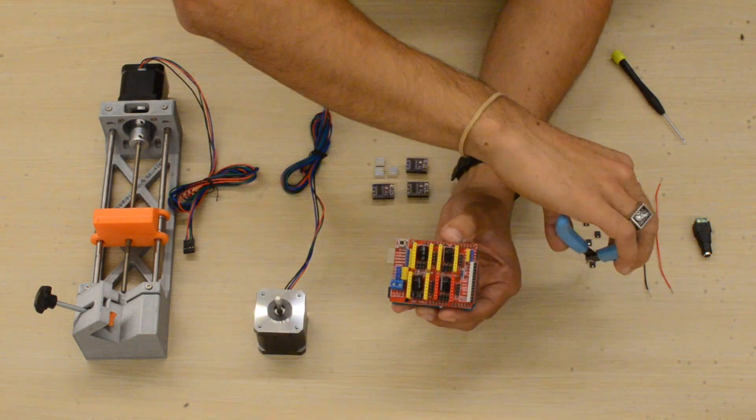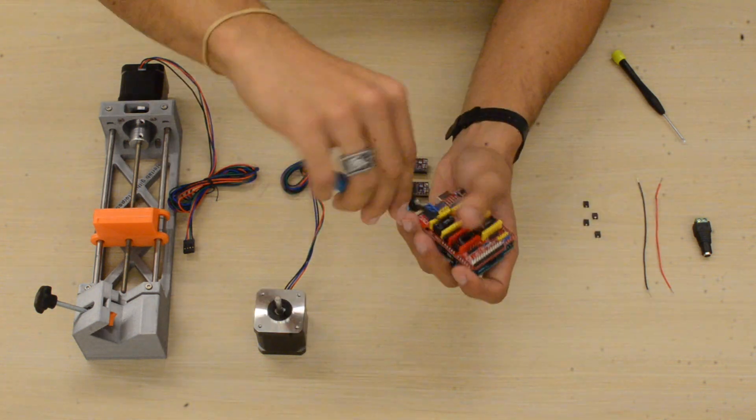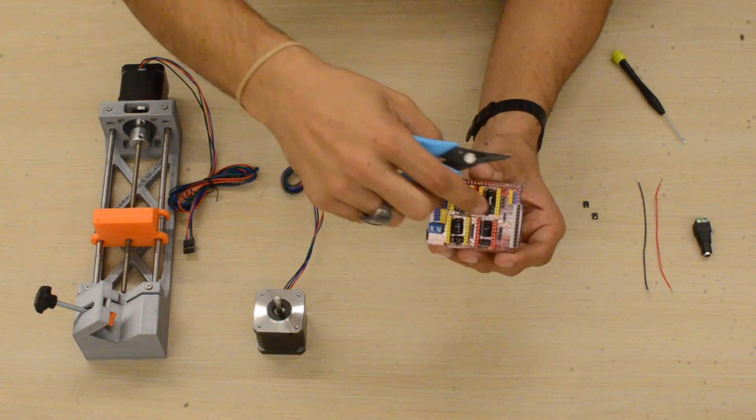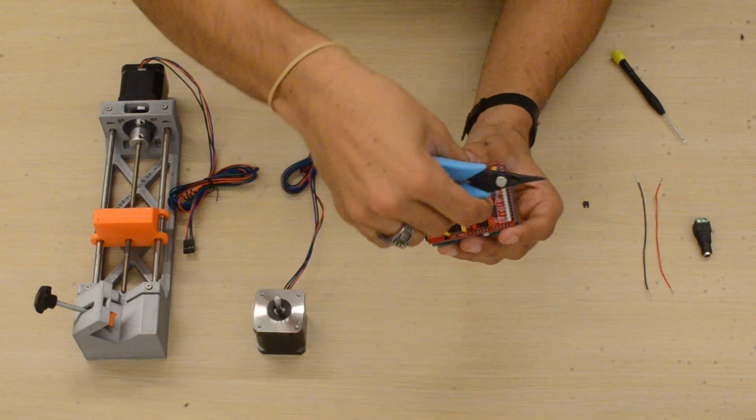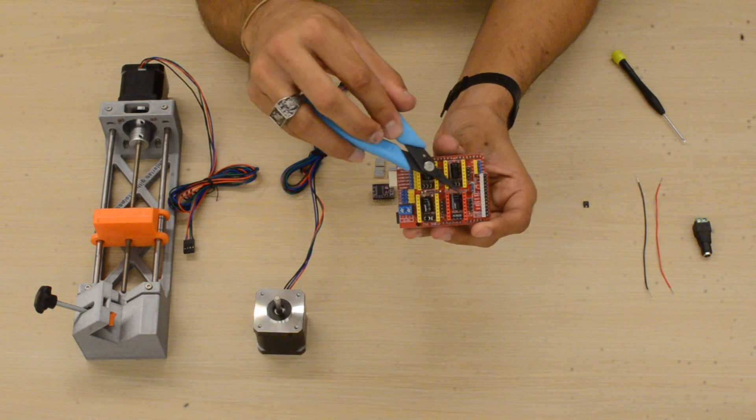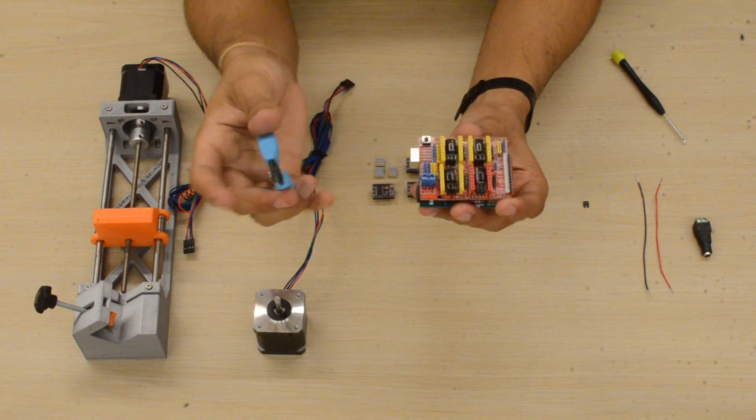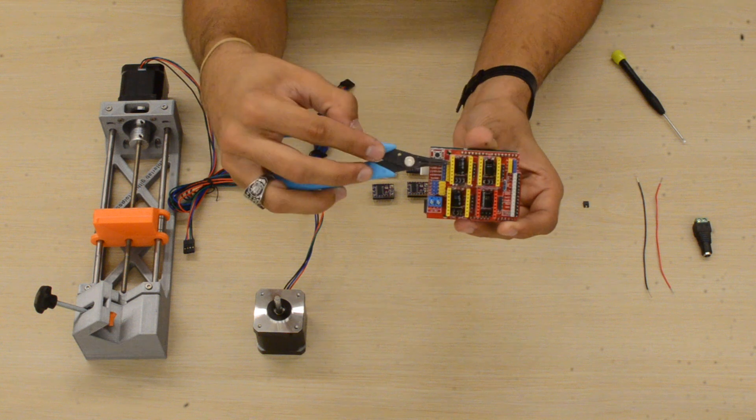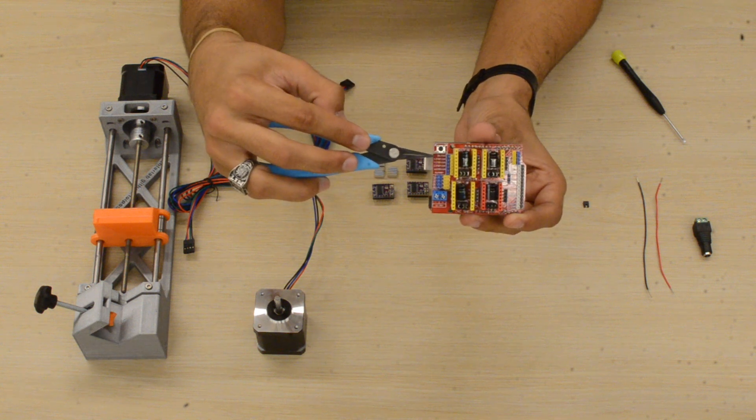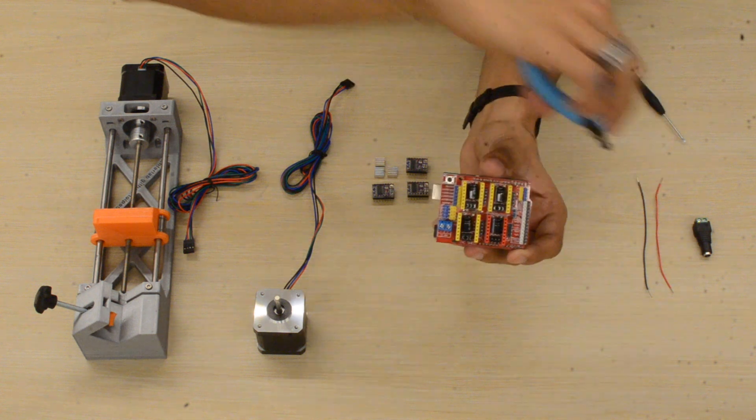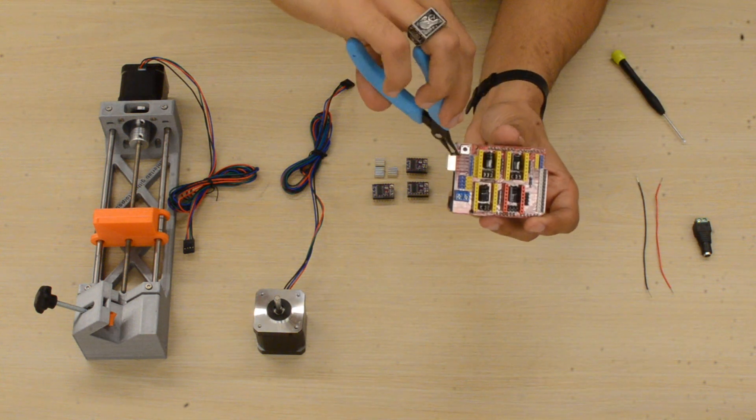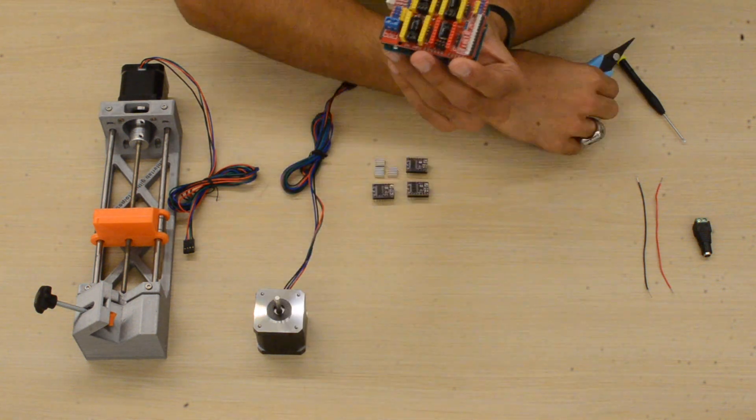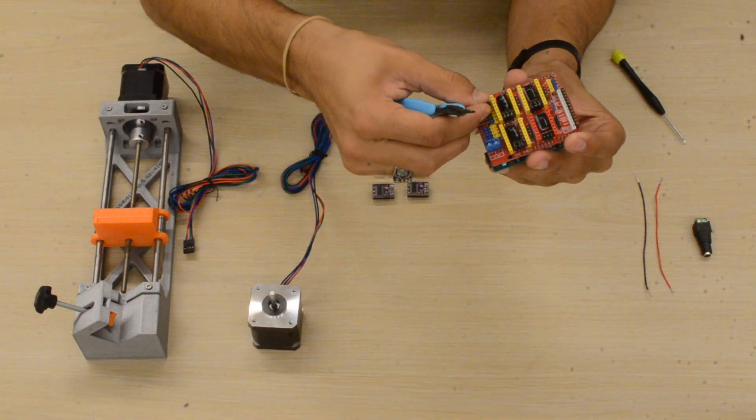We'll do that for all of the motors—three jumpers for each of the three motors. Next, we're going to put a jumper on the enable pin on the CNC shield. This will allow the motors to be automatically enabled whenever we run our software, making it easier. You can think of these pins as switches or decisions, and in our case, we're enabling all the stepper motors to be on.